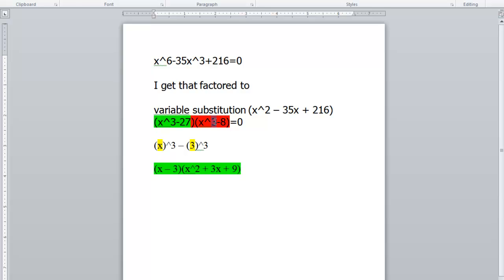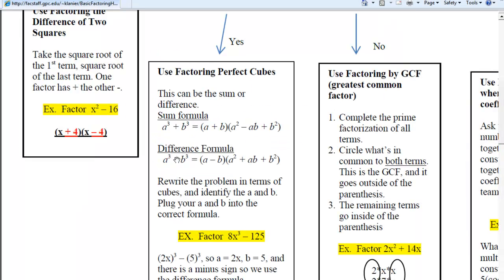So the first term is a perfect cube and 8 is a perfect cube. And how does that happen? Well, x is raised to the third power to get x cubed. And 2 is raised to the third power to get 8. So when we're factoring this, the same thing applies as before.